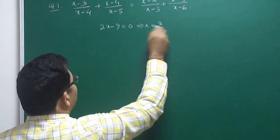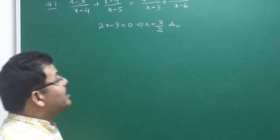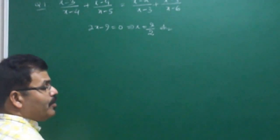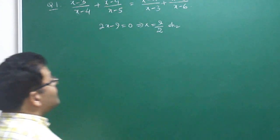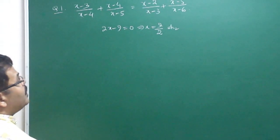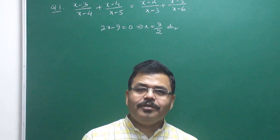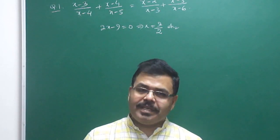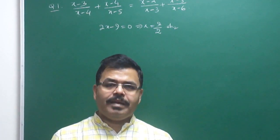So x = 9/2. That is the answer — nothing more is needed to solve this question. As I said, it literally takes 2 seconds. Adding these gives 2x-9, and adding these also gives 2x-9.